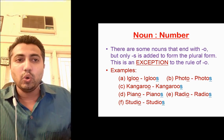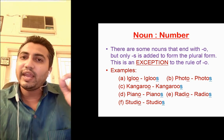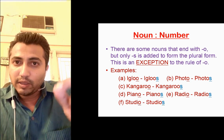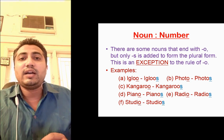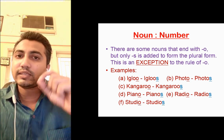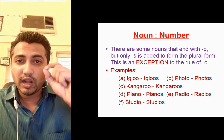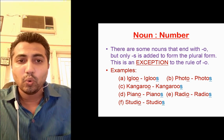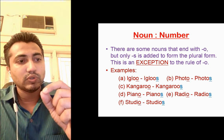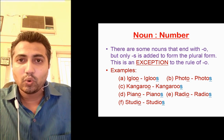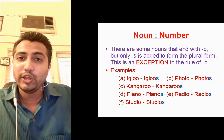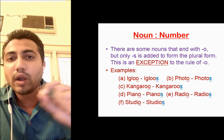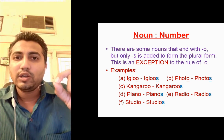Now the next rule: there are some nouns that end with 'o', but to convert them into plural, we only add 's' — not 'es'. This is an exception to the rule of 'o'. For example: igloo → igloos, photo → photos, kangaroo → kangaroos, piano → pianos, radio → radios, studio → studios. All these end with 'o' but we only add 's'. This is an exception to the rule of 'o'.